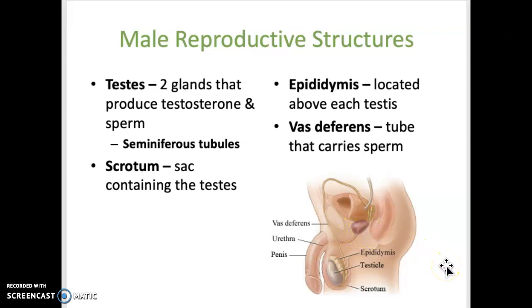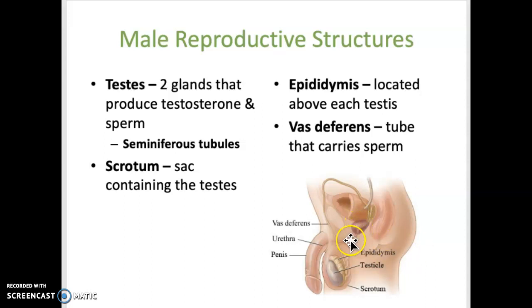The bulbourethral glands are not visible on this picture because they're very small. There are two pea-sized glands located under the prostate, and they also contribute to seminal fluid. The urethra is a single tube that passes through the penis and carries urine and semen out of the body. It extends from the base of the bladder to the outside of the body, and the penis is the structure that delivers sperm to the female reproductive tract.